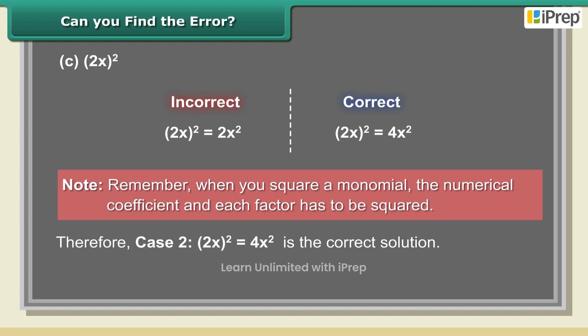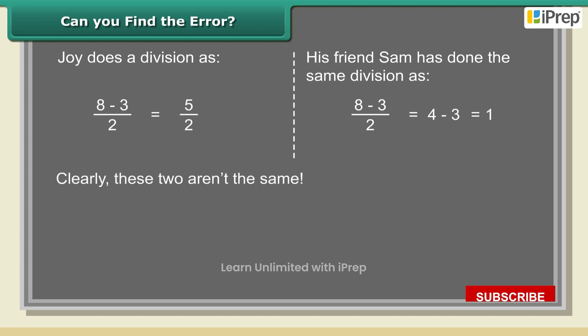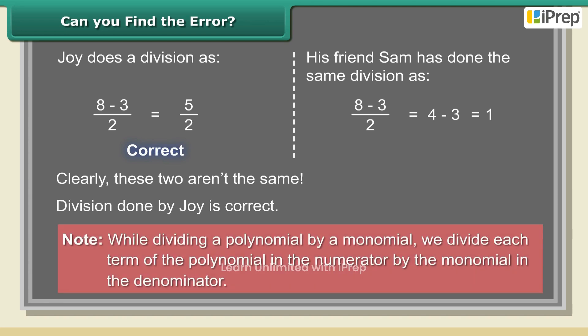Joy does a division as (8 - 3) ÷ 2 = 5 ÷ 2. His friend Sam has done the same division as (8 - 3) ÷ 2 = 4 - 3 = 1. Clearly, these two are not the same. Division done by Joy is correct. While dividing a polynomial by a monomial, we divide each term of the polynomial in the numerator by the monomial in the denominator.